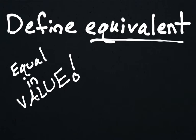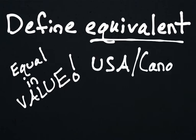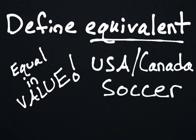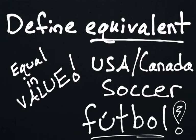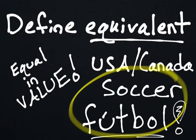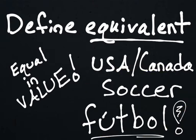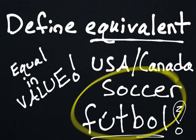If a math example isn't going to do the trick for you, here's a real-world example. In the U.S. and Canada, we typically call it soccer, but in the rest of the world, the equivalent word is football. They both mean the same sport, but they have different names depending on where you are in the world. These words are equivalent.